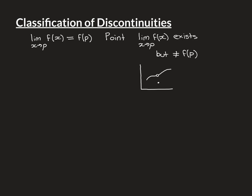We'll go from simplest to most complicated. The simplest type of discontinuity is called a point discontinuity. Here, the limit as x approaches P of f(x) is going to exist, but it's not going to equal the value of the function at P. Graphically, the function has a hole at the point P.